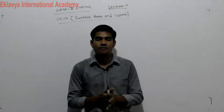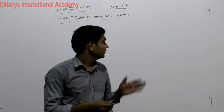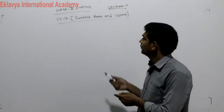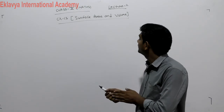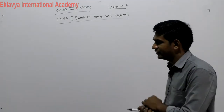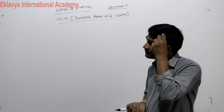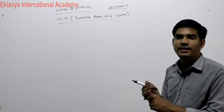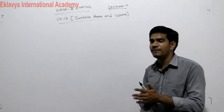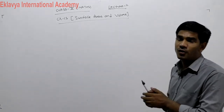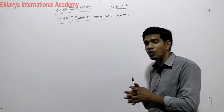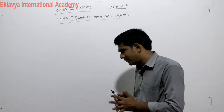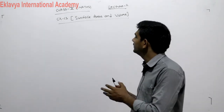Good morning students, welcome once again to 10th class Maths lecture. In the previous lecture of Chapter 13, Surface Areas and Volumes, in lecture one we already discussed the formulas of solids — how to find the TSA and CSA of cube, cuboid, cone, cylinder, sphere, and hemisphere. I hope all of you have learned all these formulas.